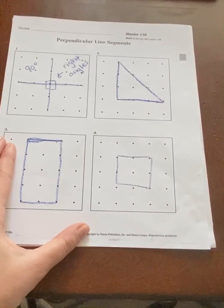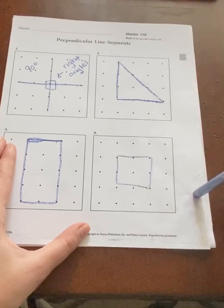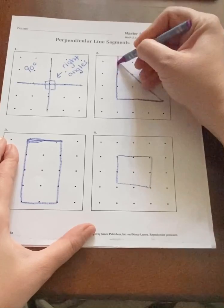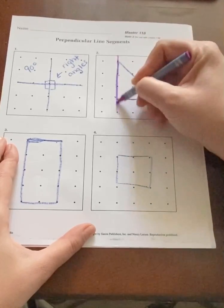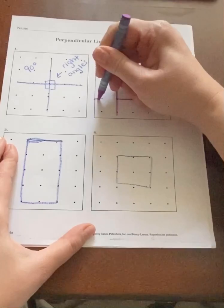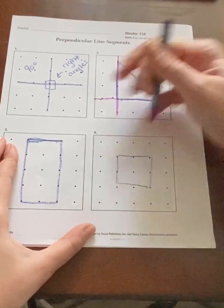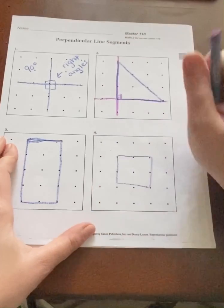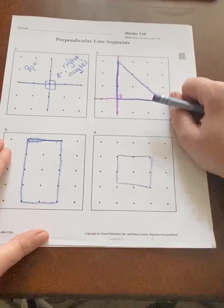Alright, so now I'm gonna use a different color so we can see that perpendicular line segment. So on our triangle right here, we have this line going down and this line going across because these right here meet in a 90-degree angle. So this is the perpendicular line segment on this shape.